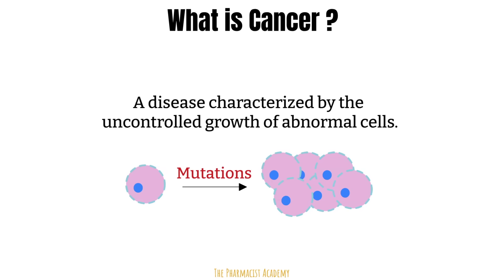Mutated, or mutation, meaning there were changes in the DNA or genes that led to an abnormal cell that doesn't function as it would in normal circumstances. All cancers start with mutations in our DNA. Just like how for diabetes we think of sugar or glucose, for cancer, let's think of DNA and genetics.